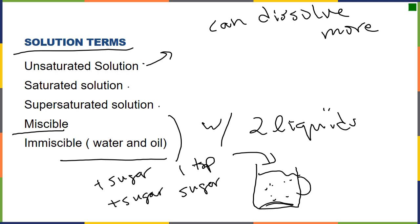And when that happens, you would get a layer of sugar on the bottom. When you can't dissolve any more, it becomes saturated. So no more can dissolve is going to be a saturated solution.